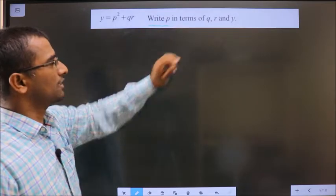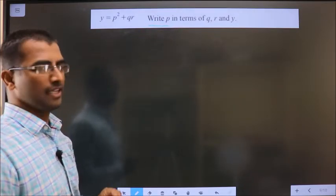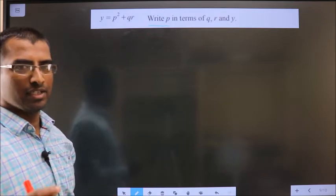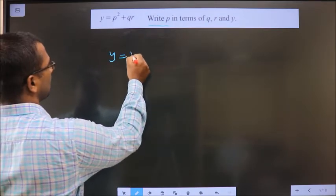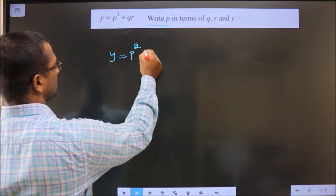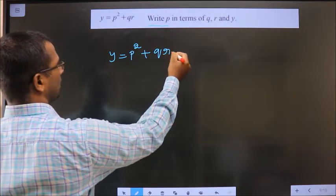Write p in terms of q, r and y. Given equation is y equals p squared plus qr.